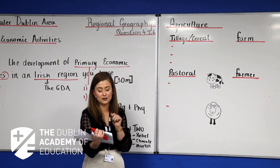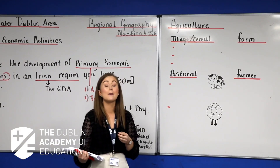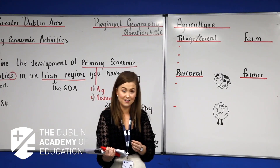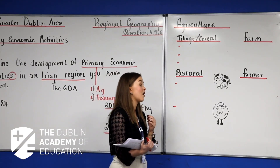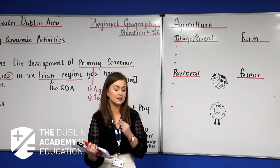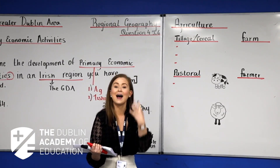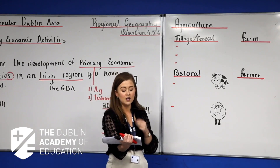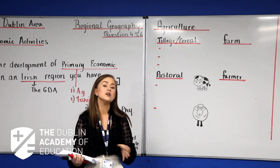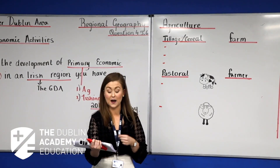A favorable natural environment — linking up your physical characteristics in the region — means that farming or agriculture is mechanized and intensive. Mechanized means there is a high level of machinery used throughout the region. The region's deep fertile soils — for example, brown earth soils, sandy loam soils, or alluvial soils found on the flood plains of rivers — support productive agriculture.